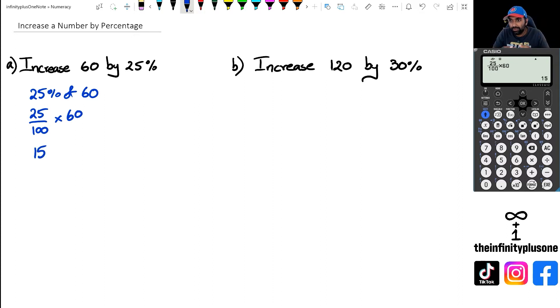So 25% of 60 is 15. But the question is actually asking to increase 60 by 25%. That means to increase, we need to add 15 to the 60. So we're going to go 60 plus 15 equals 75.